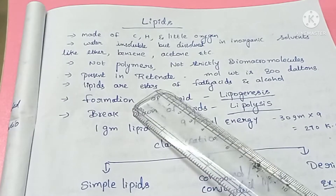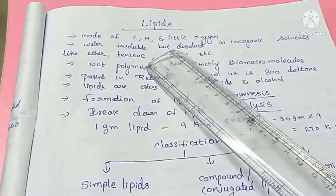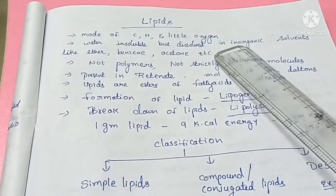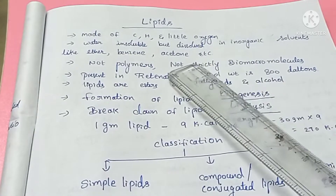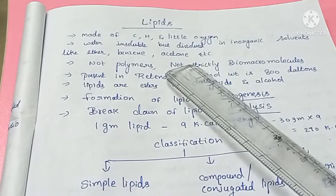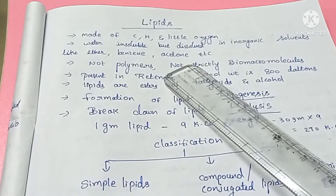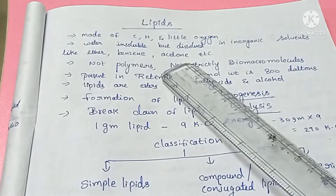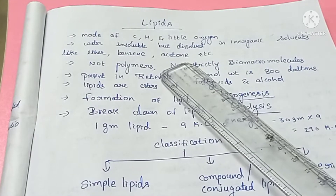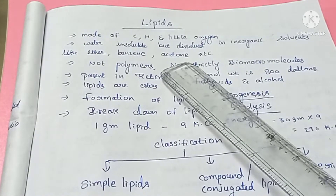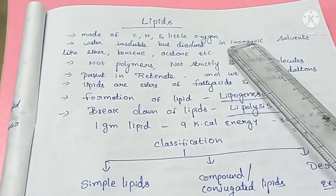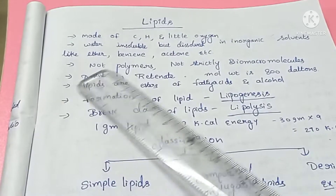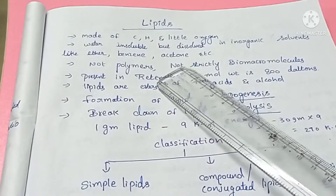What are lipids? Lipids are made of carbon, hydrogen, and a little oxygen. These lipids are normally not soluble in water. If we look at oil, ghee, or water, it will not be soluble in water. However, it will dissolve in some organic solvents — that means ether, benzene, and acetone.